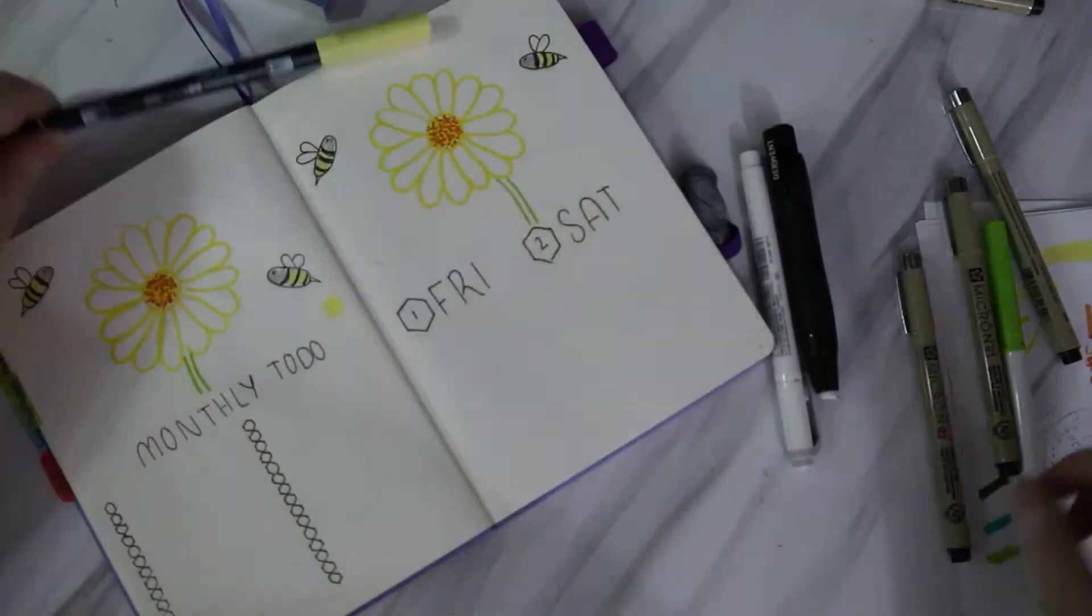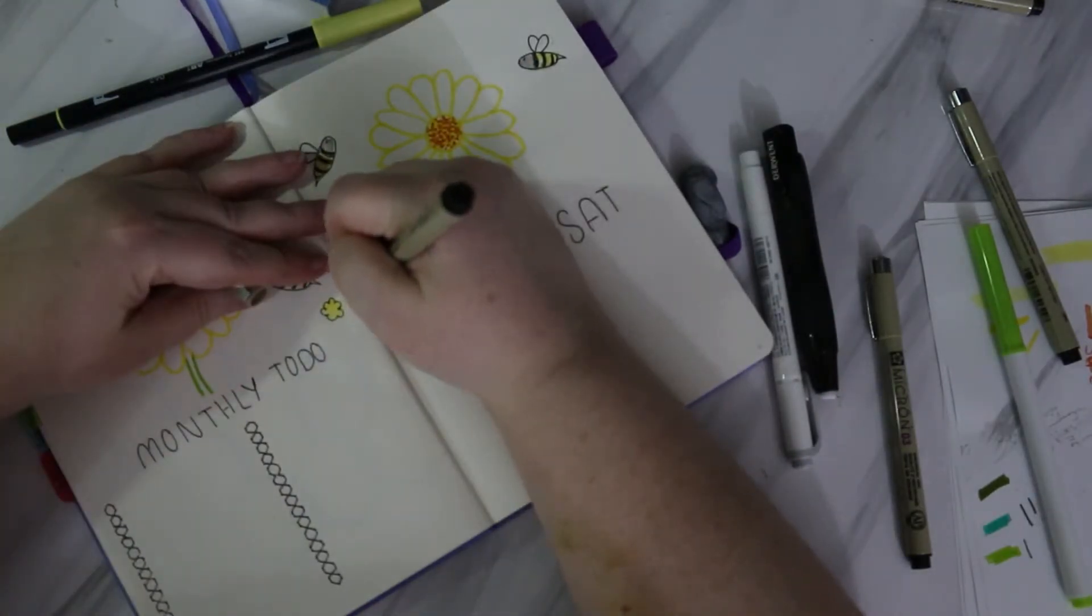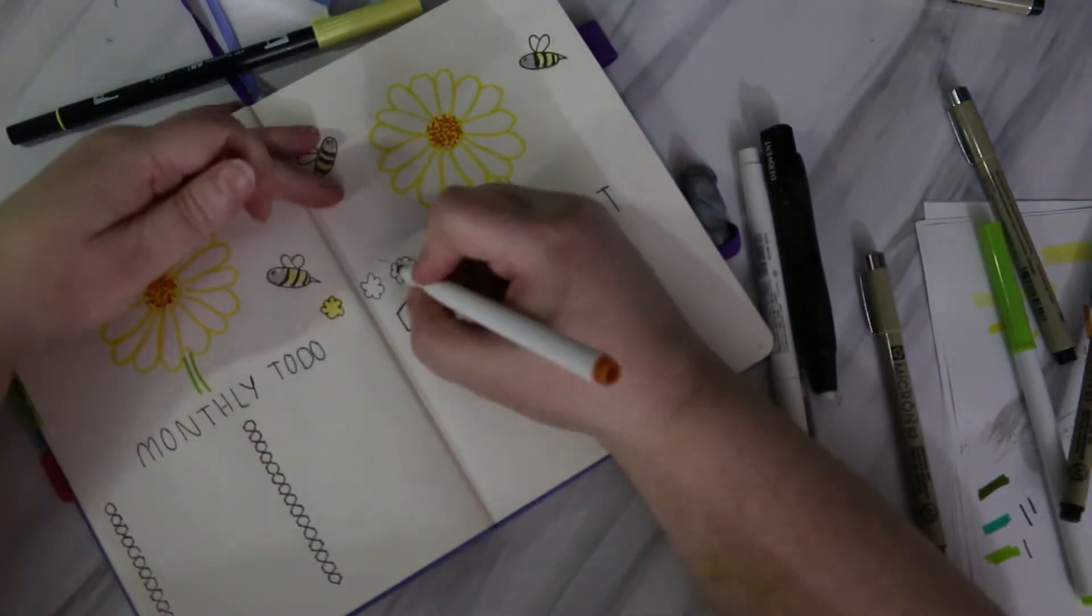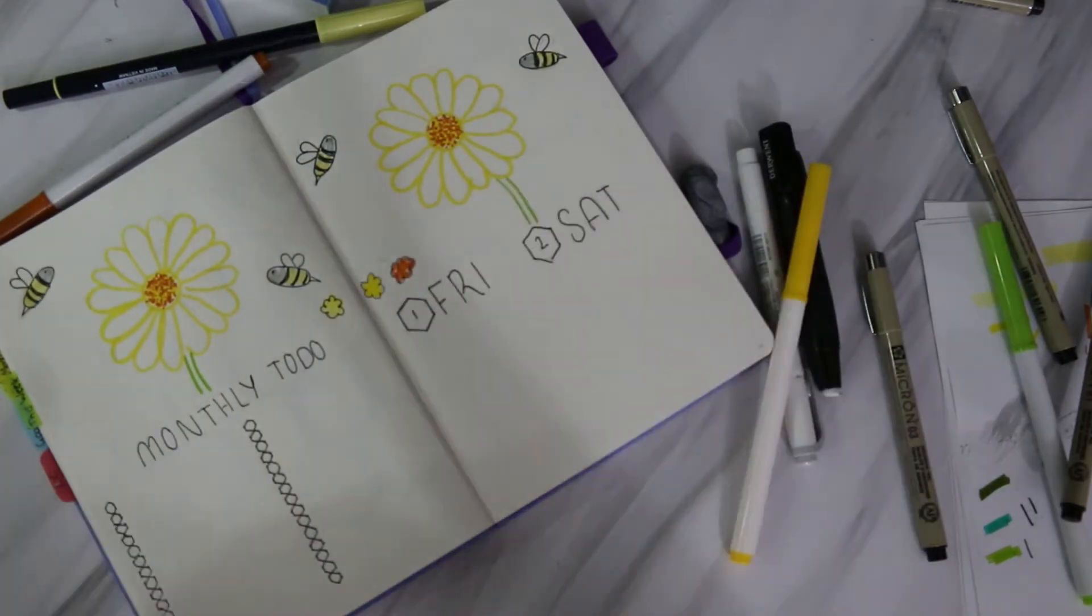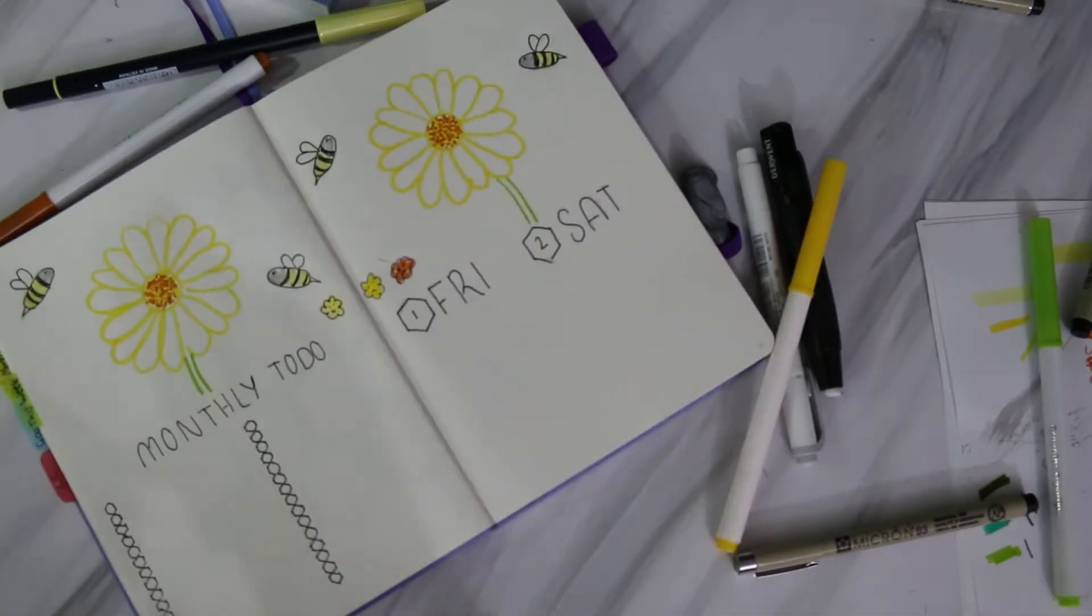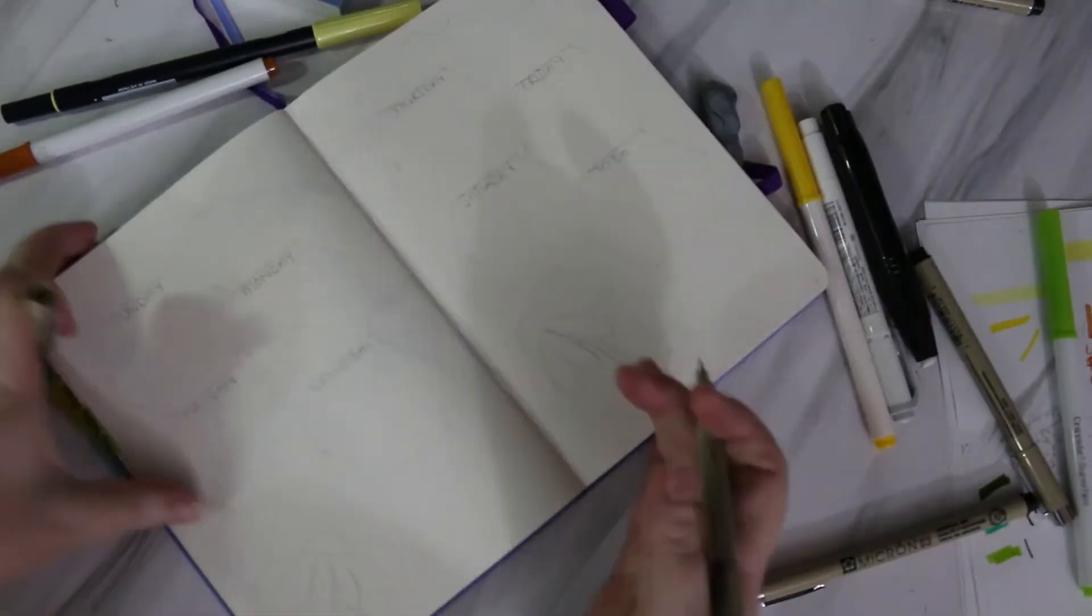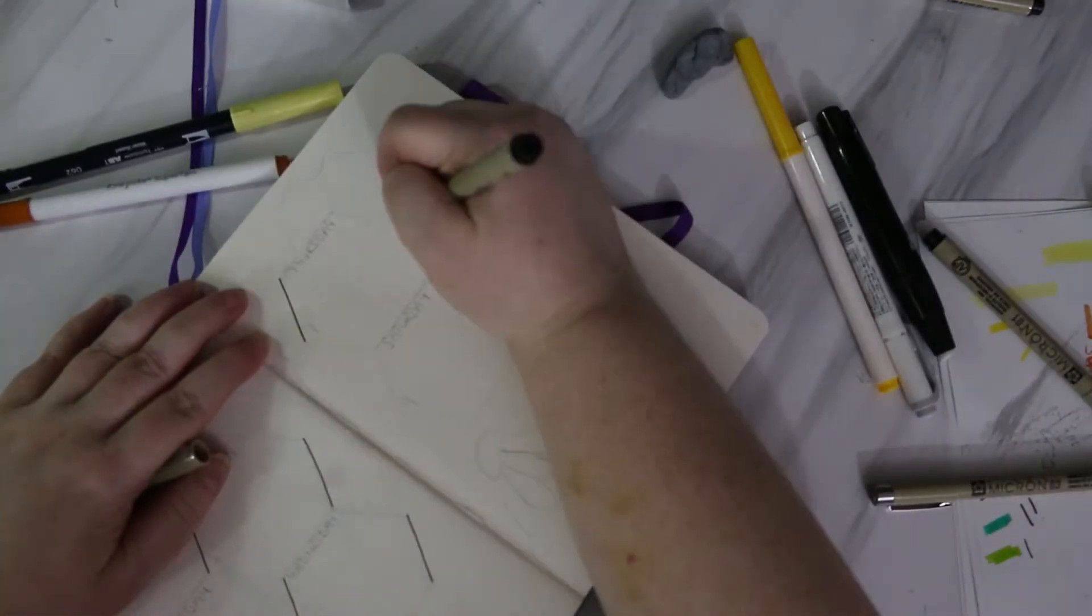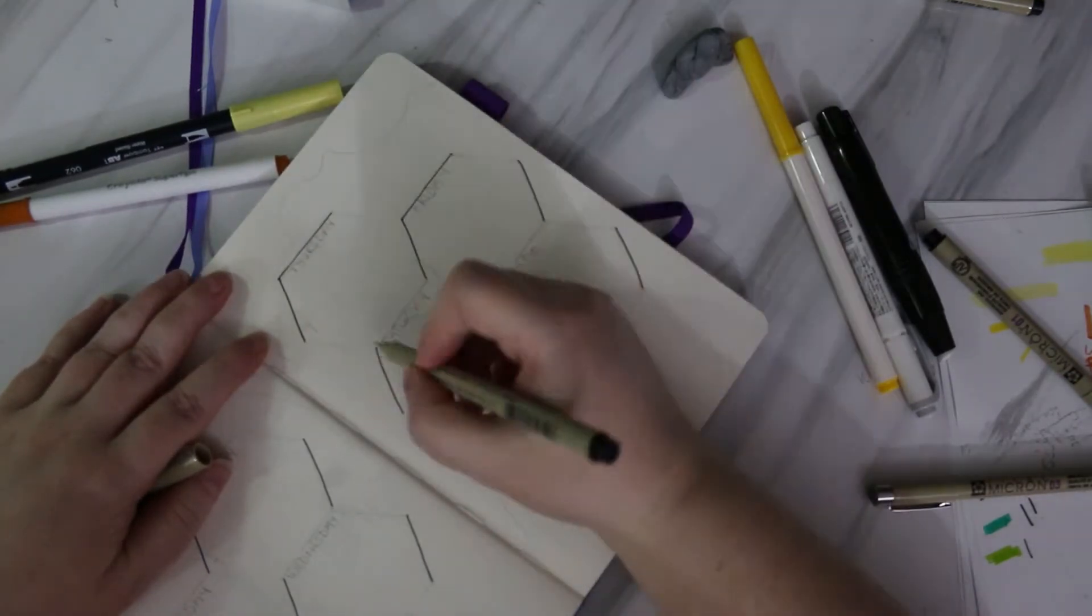So here is the key for my mood tracker with the little faces inside the flowers. Because there is only two days in the first week of March, I am going to do a second weekly spread.